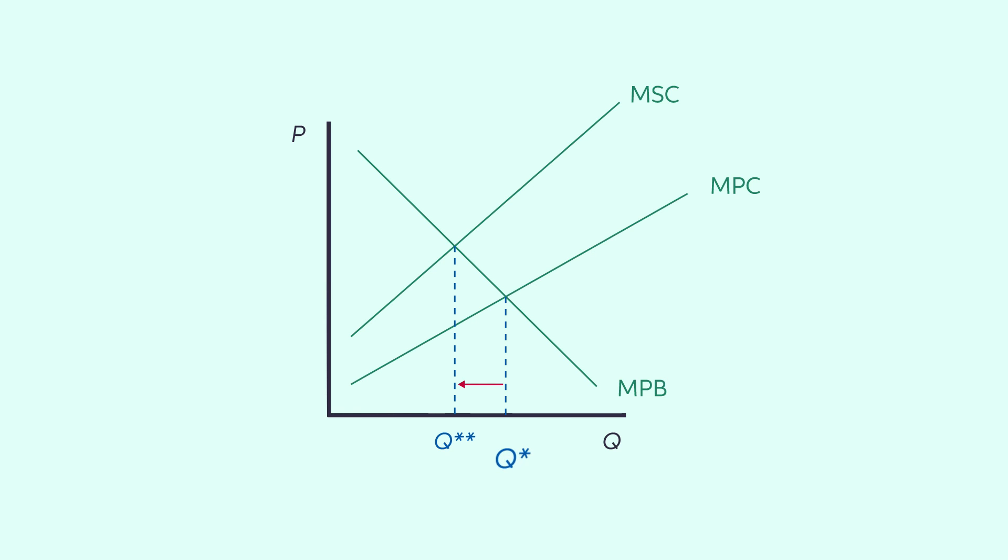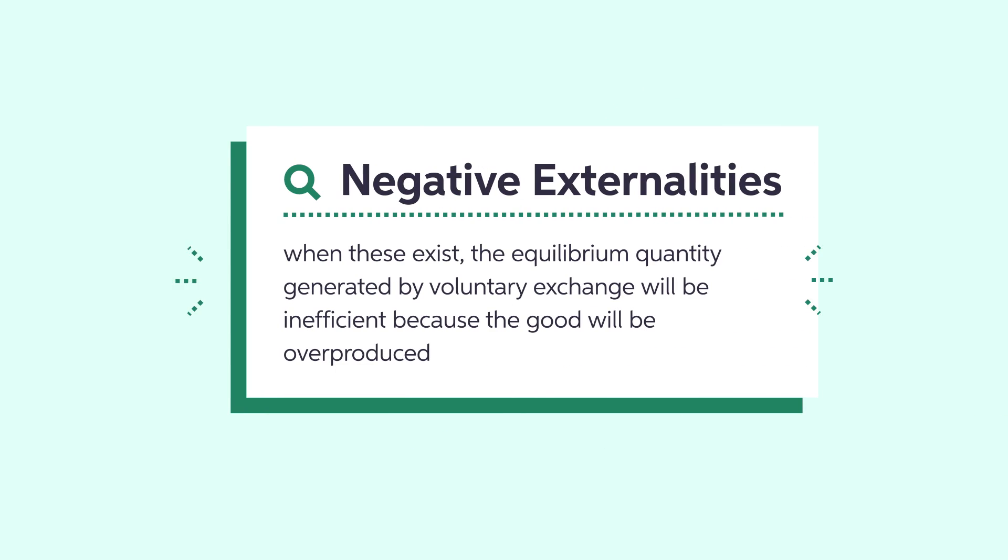At the quantity QStar, the MSC is greater than the MPB. The decline in social cost from decreasing output would be greater than the lost private benefit. Therefore, net social benefits would increase by decreasing the number of blue-jeans produced until the quantity QDouble Star. As a result, there will be an inefficient allocation of resources with an overproduction of blue-jeans.